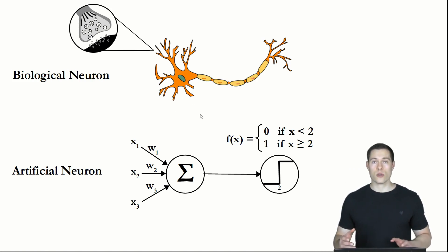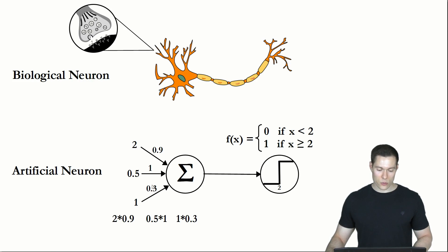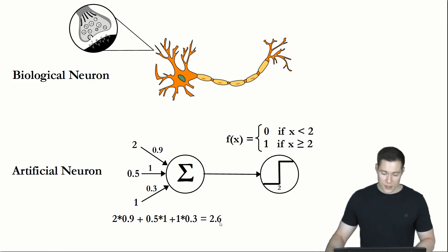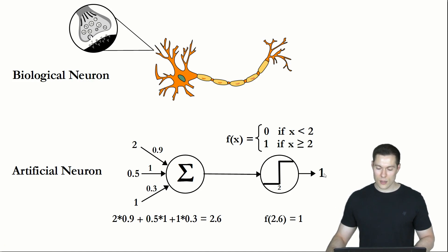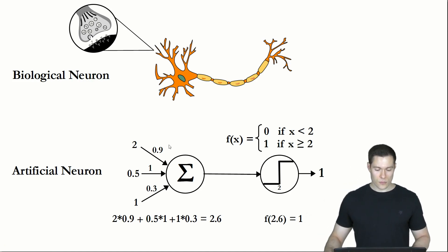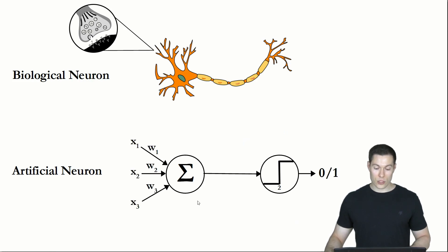Let's look at some examples. If the input values are 2, 0.5, and 1, and the weights are 0.9, 1, and 0.3, we multiply each input by its weight and add the products — calculating a weighted sum. In this case the weighted sum is 2.6, which we put into the activation function. Since 2.6 is greater than or equal to 2, the function returns 1, so the neuron outputs 1. If instead the first weight is 0.2, the weighted sum becomes 1.2 and the neuron outputs 0.